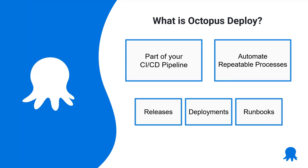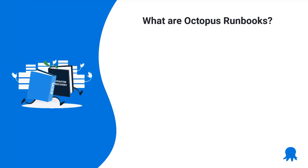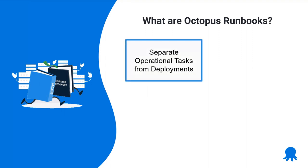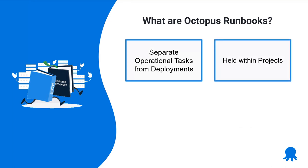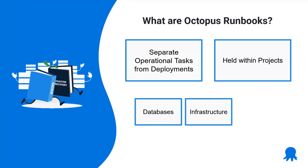We've also got Runbooks. Runbooks give us a way to separate out operational tasks that are outside the normal deploy process. They're held within projects but don't run as part of the deploy. Some things you'd do under these circumstances: seed a database with data, stand up infrastructure just once, or run maintenance tasks - maybe a health check fails on a VM and we'd like to restart it. It's probably an underappreciated feature of Octopus Deploy, but it's super powerful.